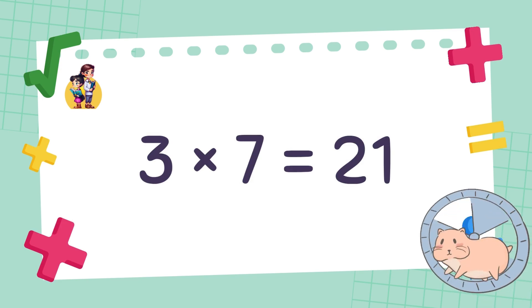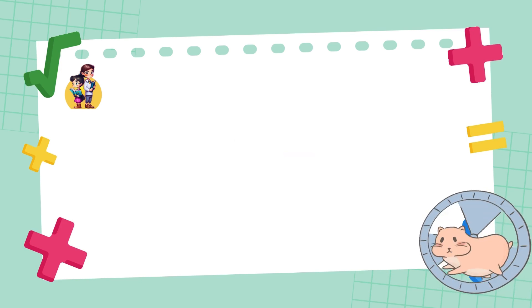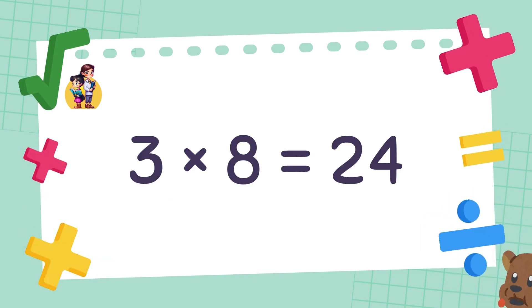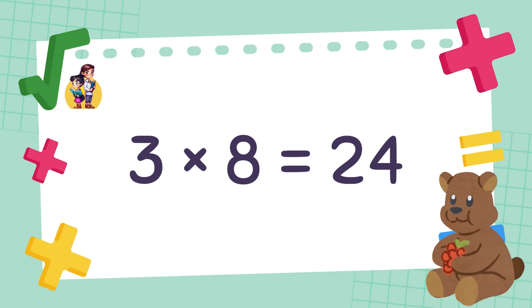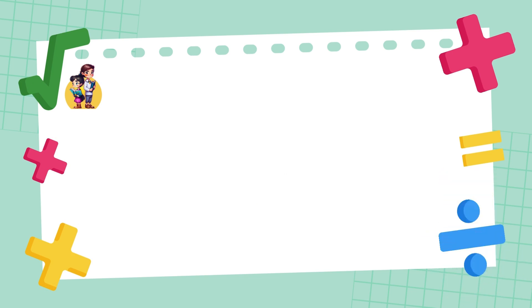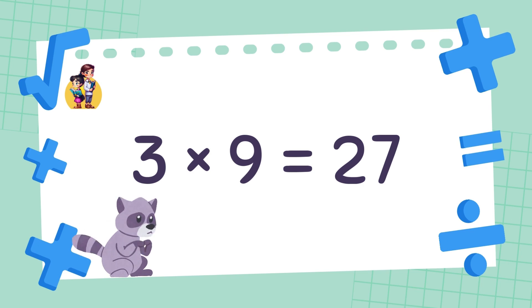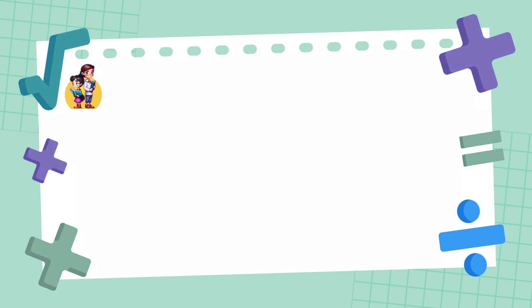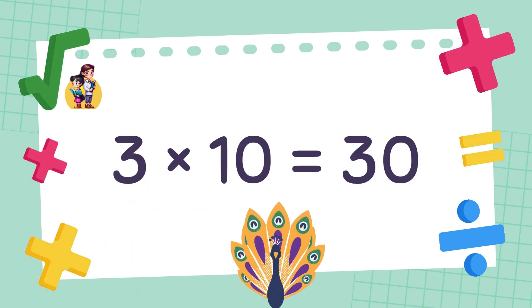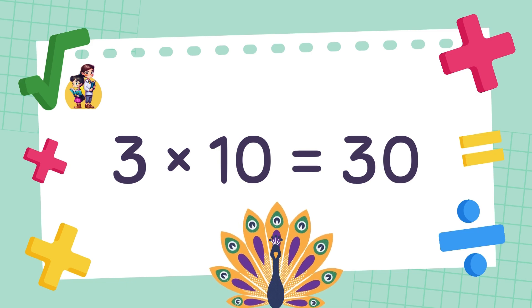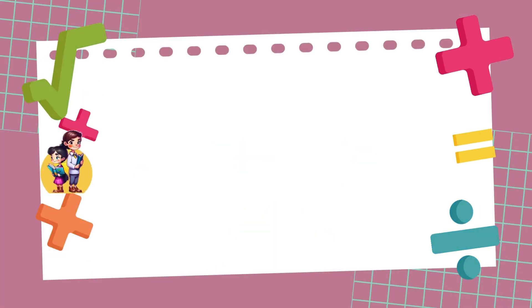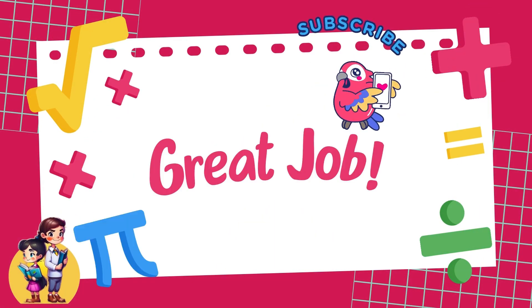3 x 7 is equal to 21. 3 x 8 is equal to 24. 3 x 9 is equal to 27. 3 x 10 is equal to 30. Great job!